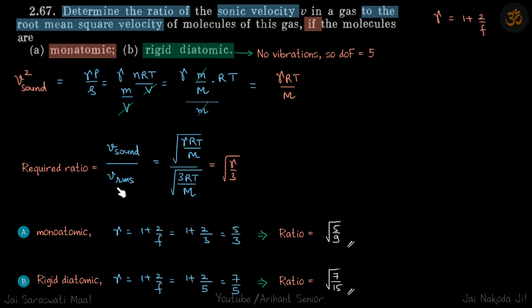So our required ratio is velocity of sound upon V_RMS. So it is sqrt(gamma RT by M) upon sqrt(3 RT by M), which equals sqrt(gamma by 3).